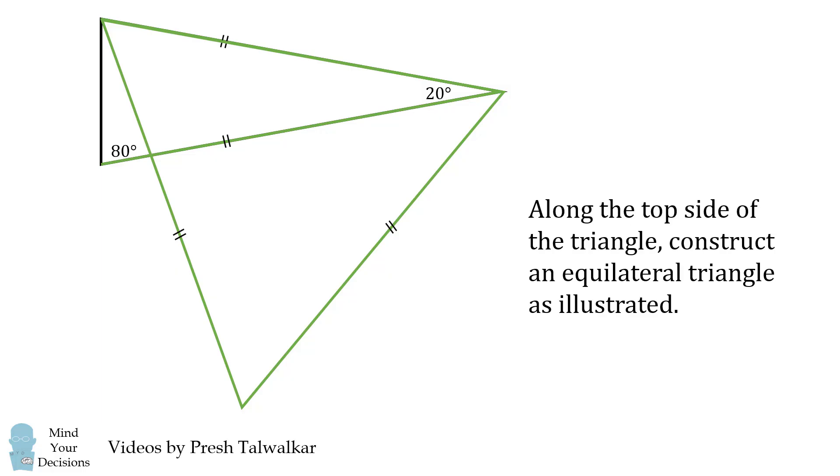Since it's an equilateral triangle all of the angles will be equal to 60 degrees. So this is 60 degrees. This other angle will be 60 degrees in total, so this will be 40 degrees and here we have another 60 degree angle.